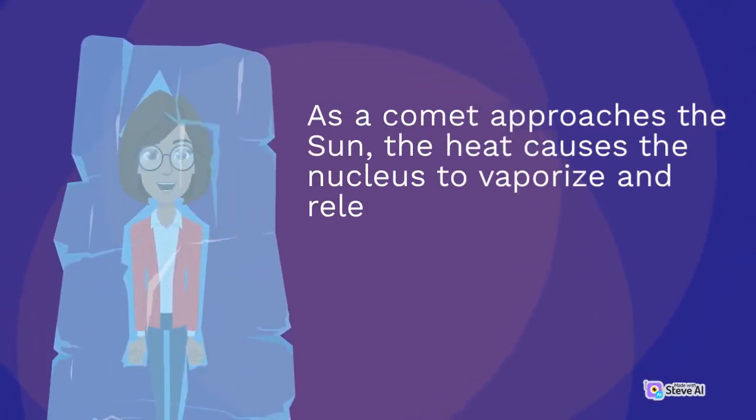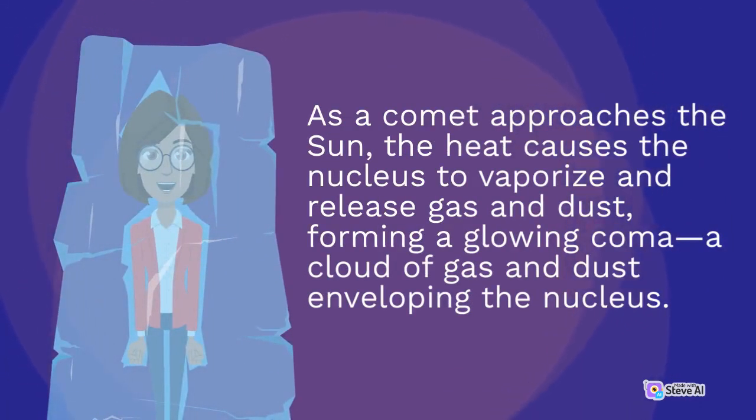As a comet approaches the Sun, the heat causes the nucleus to vaporize and release gas and dust, forming a glowing coma, a cloud of gas and dust enveloping the nucleus.